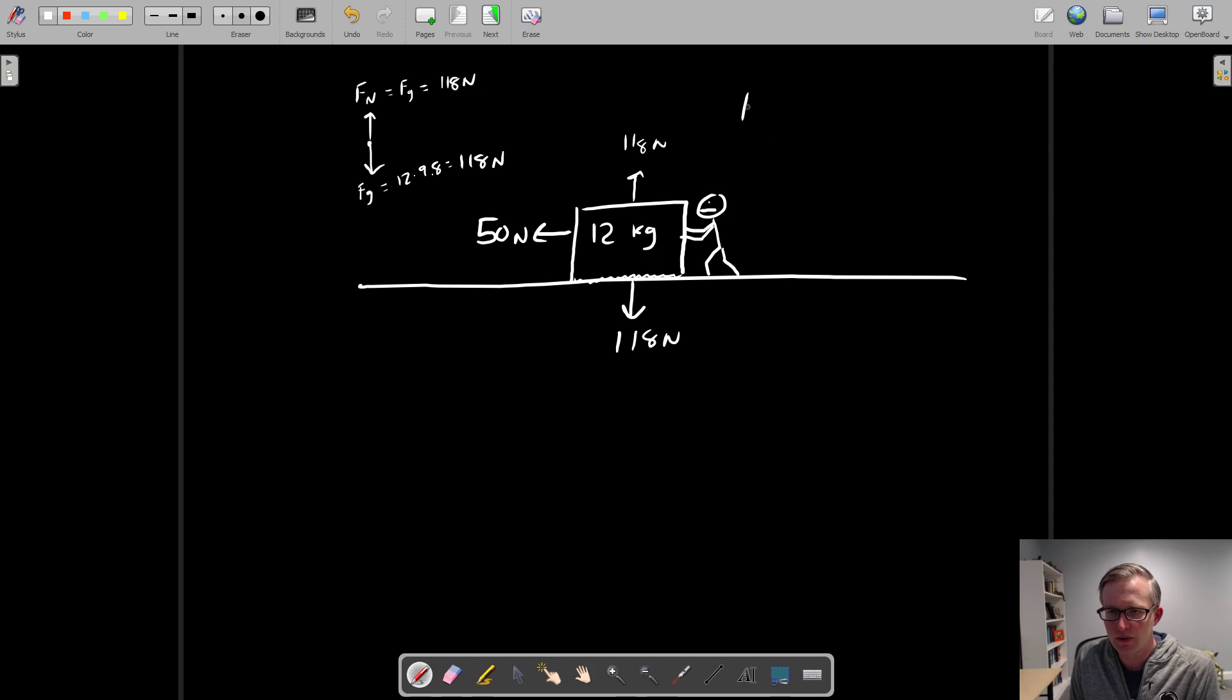The information I'm going to give you is that we have a mu_s of 0.47 and a mu_k, the coefficient of kinetic friction, of 0.38. This one's the coefficient of static friction. The coefficient of kinetic friction is always lower than static friction.